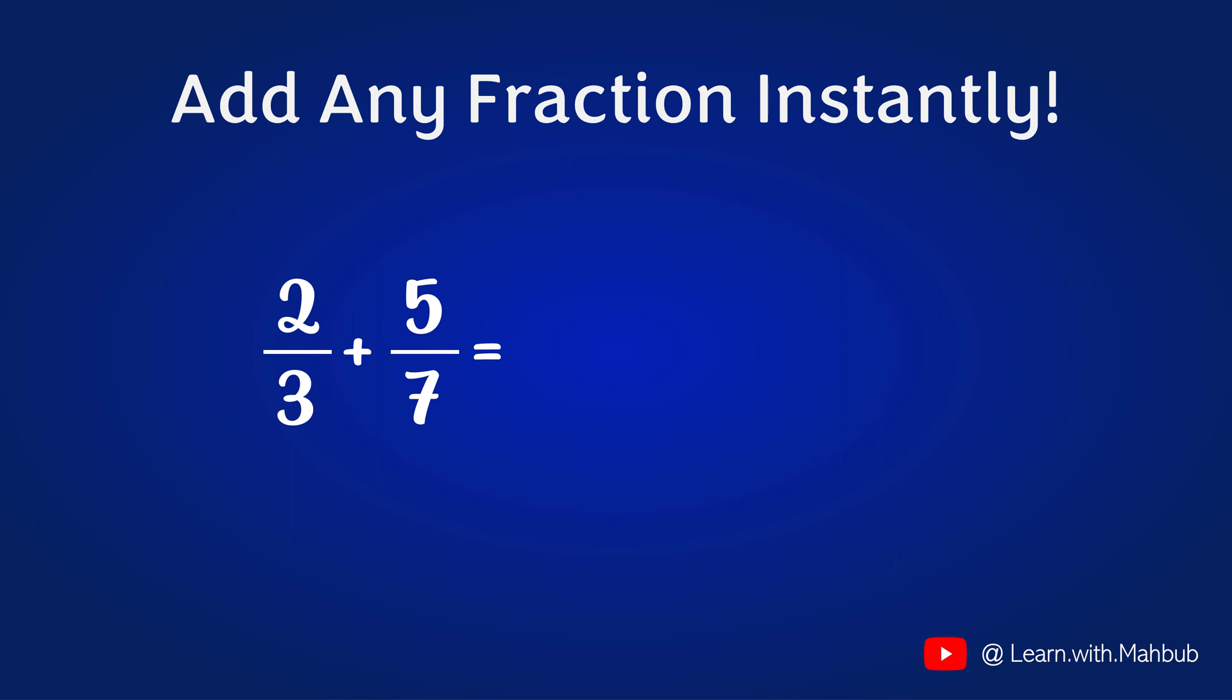Let's go to another example which will give us a mixed number in the result. Let's add two thirds with five sevenths. 3 times 7 is 21 which will be in the denominator. Now let's cross multiply. 2 times 7 is 14 and 5 times 3 is 15. Since we are adding, let's put a plus sign here. 14 plus 15 is 29.